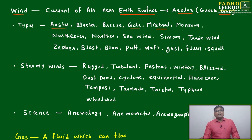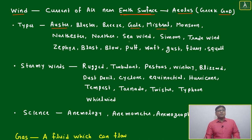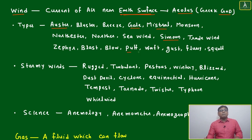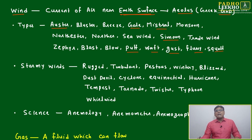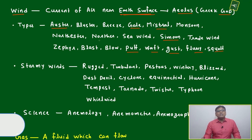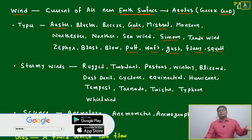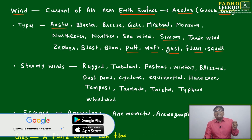Types of wind you will see: austere, bluster, breeze, gale, mistral, monsoon, northeaster, norther, sea wind, trade wind, fire blast, blow, puff, waft, gust, flood. These words are all related to wind — just take the idea, no need to go in depth.